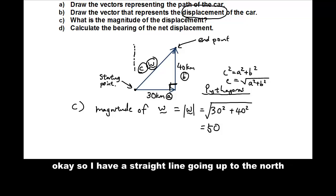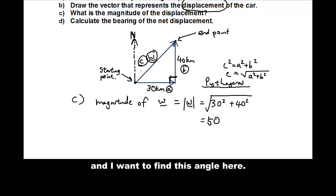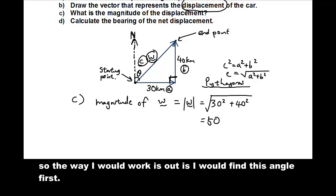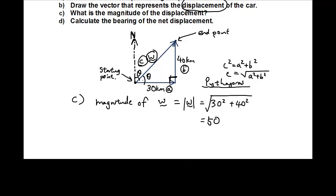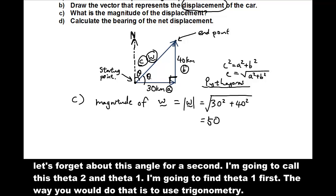So I want to find this angle. Okay, so I have a straight line going up to the north. And I want to find this angle here. Which is the bearing of vector W. So the way that I work it out is I would find this angle first. And let's forget about this angle for a second. So I'm going to call this theta 2 and theta 1. So I'm going to find theta 1 first.